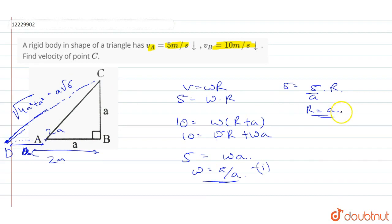Omega ki value is 5 by a. Point C ki velocity will be omega r, which is omega into r equal to a root 5, which is 5 root 5. This is the velocity of C.